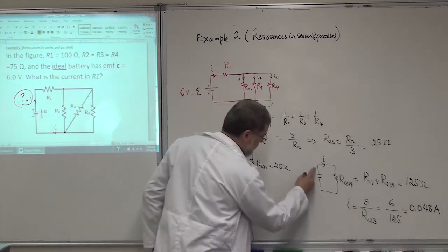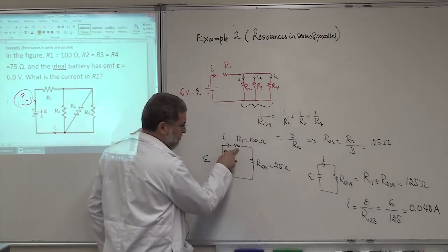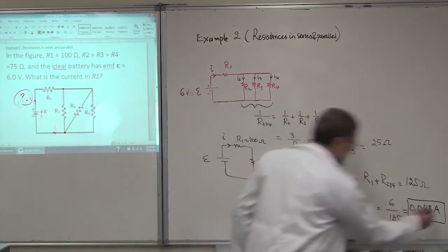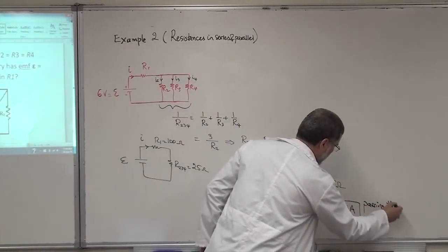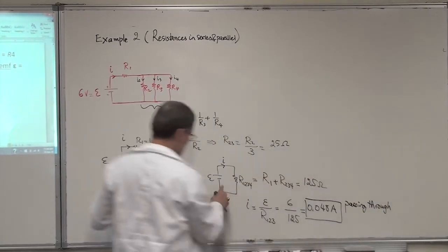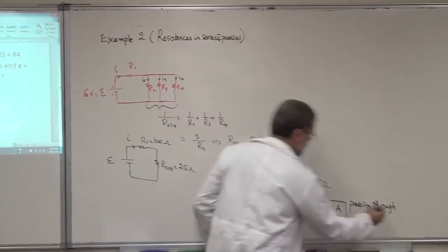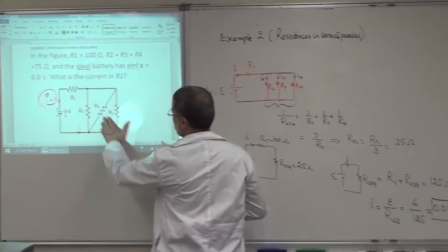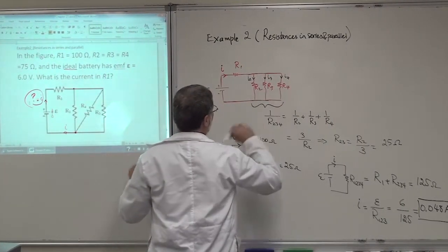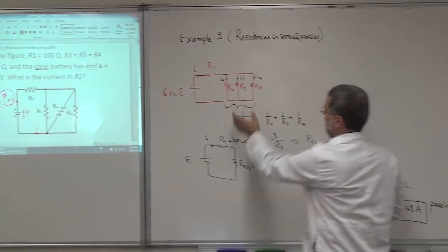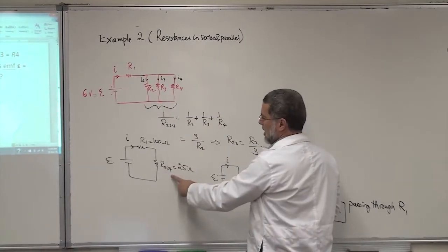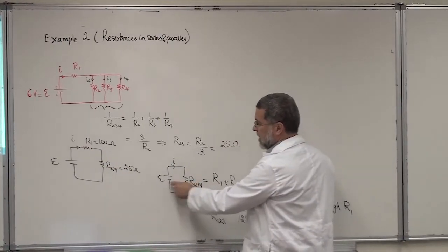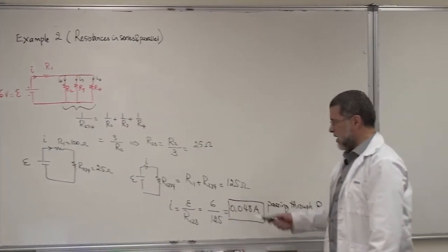This current through the battery is the same as the current through R1, which is what we were looking for — 0.048 amperes. To summarize: identify that R2, R3, R4 are in parallel; find their equivalent of 25 ohms; then R1 and the equivalent are in series giving 125 ohms; then compute I = 6/125 = 0.048 A.